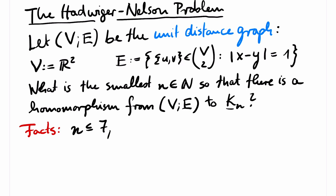A priori, it is not even clear that n can be chosen to be finite. But in fact, it is known that such a homomorphism exists for n equals seven. Only recently it was shown that n has to be at least five. But what precisely the smallest n is, is open.